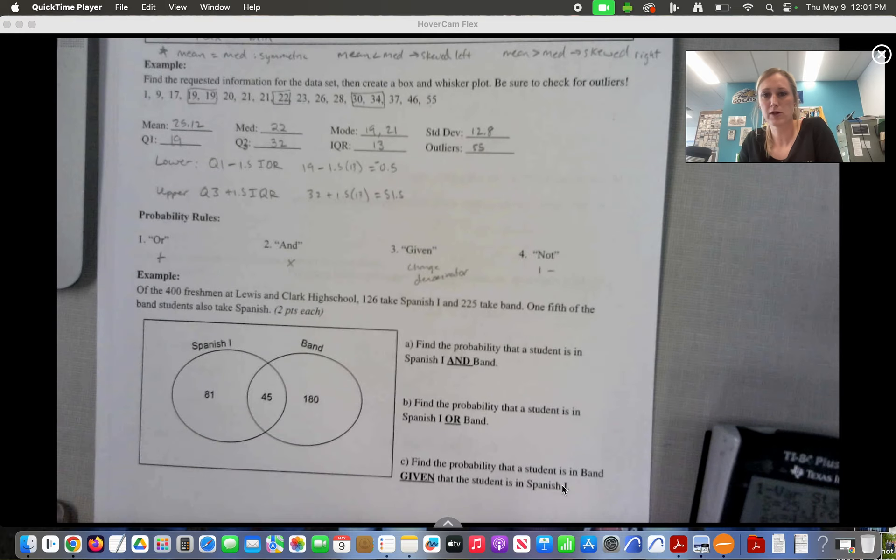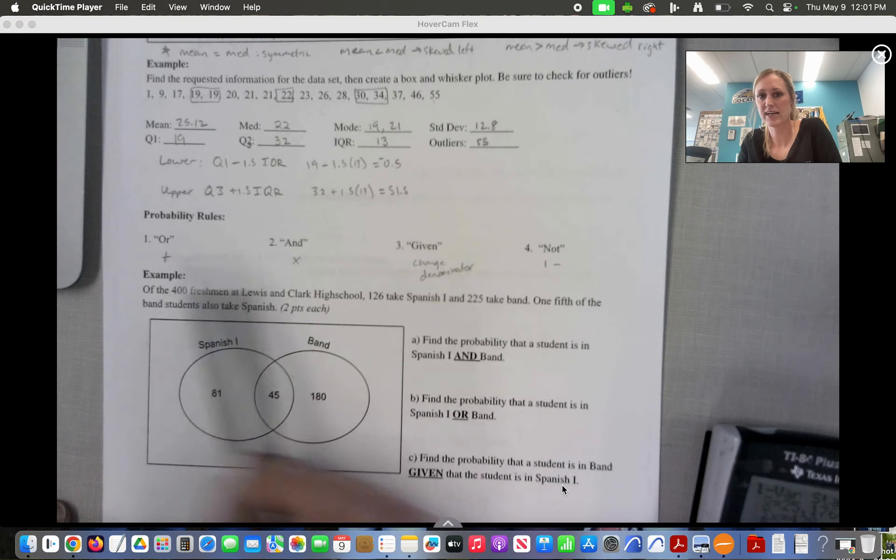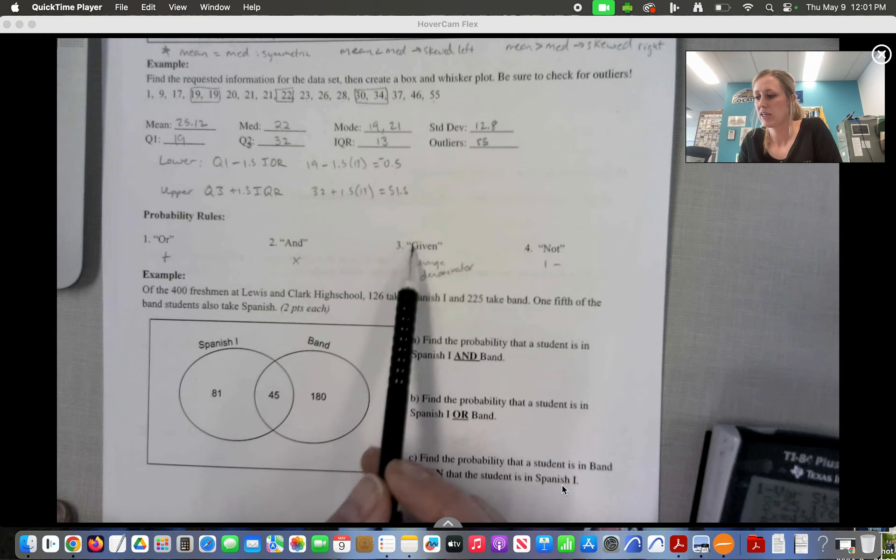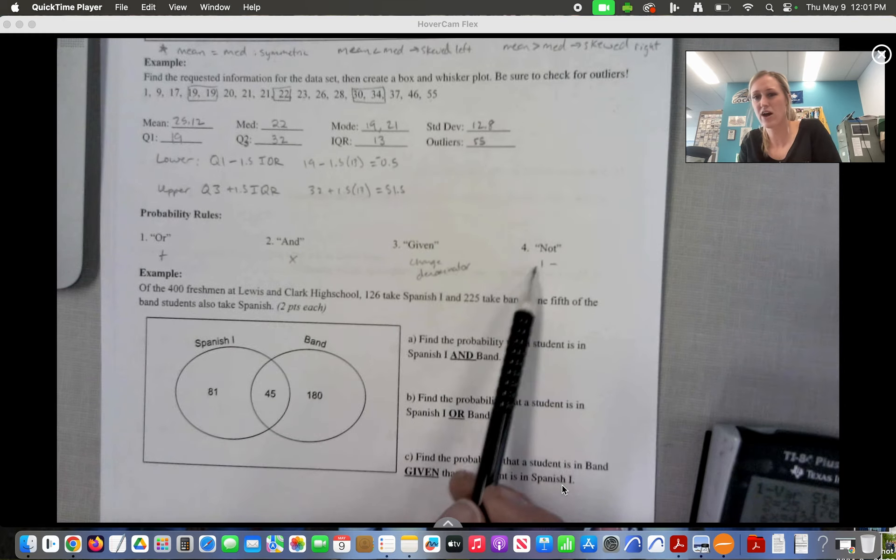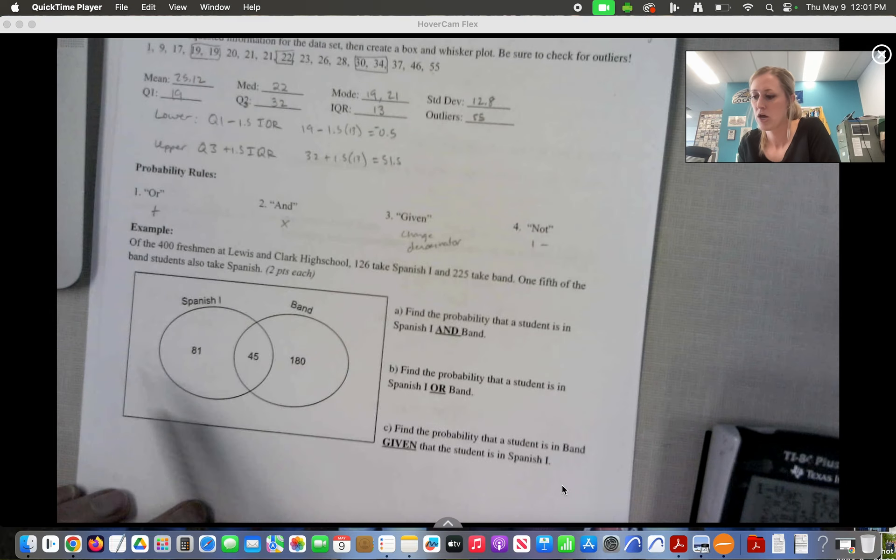Reminder about some of our probability rules. If it's or, we're adding, and is multiplication. Given means we're changing the denominator to a new total, and then not, I'm going to do 1 minus whatever that probability is.